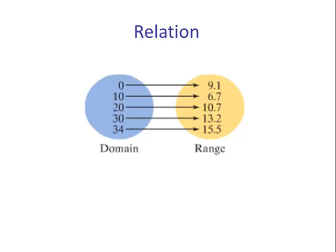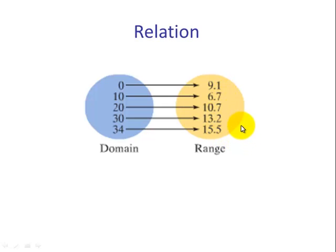Another way we can express relations is by what's called a mapping. The domain is the list of the X values — the inputs. In this case, this is the number of years since 1970. Here's the corresponding range, which is the percentages of females. It turns out that this relation is a function because for every input we have one and only one output.